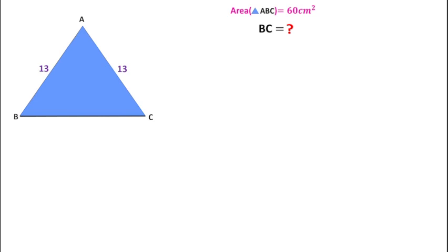Welcome to definite mind. In this question, ABC is an isosceles triangle whose equal sides are 13 cm and the area of this isosceles triangle ABC is equal to 60 cm square. Then we have to find the length of BC.